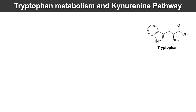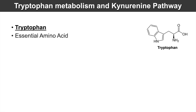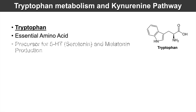Hey everyone! In this lesson I'm talking about tryptophan metabolism and the kynurenine pathway. To begin, tryptophan is an essential amino acid. It is important because it is the precursor for production of 5-hydroxytryptamine, or serotonin, and it's also important for the production of melatonin.